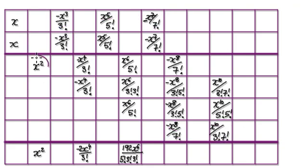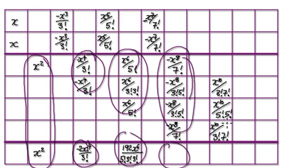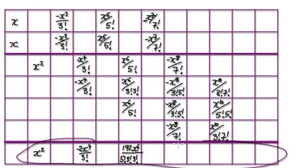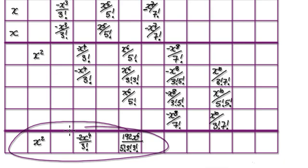And then add everything up. So add these two up, that would then give you this. Add these three up, that would then give you this. Add these up, that would then give you this. Add these up, that would then give you this, and so on. So this is your series here. You can simplify this if you want to, but this here will be your series.